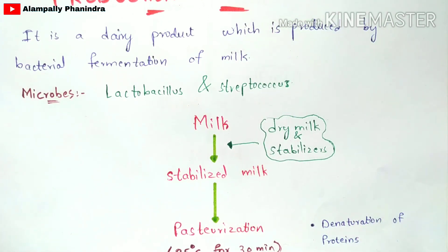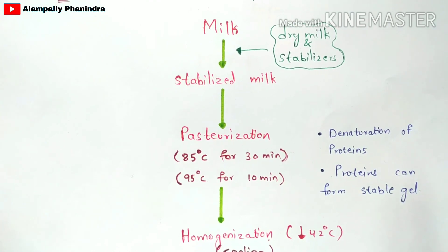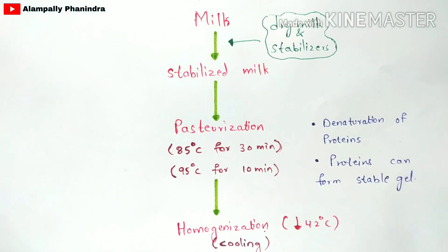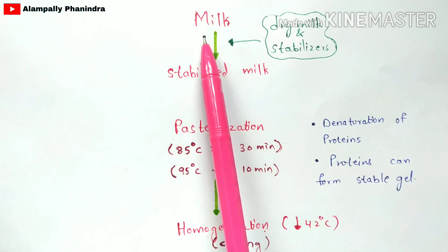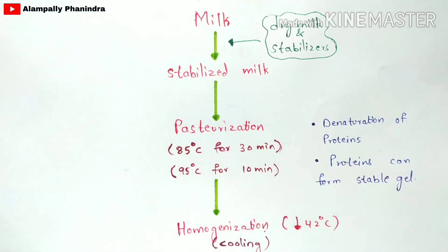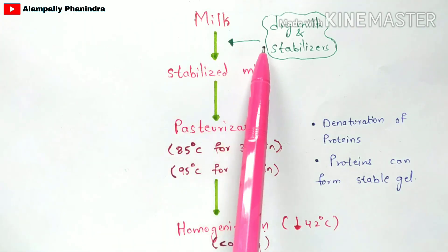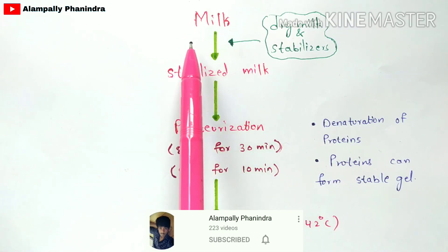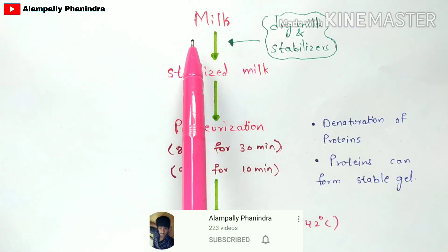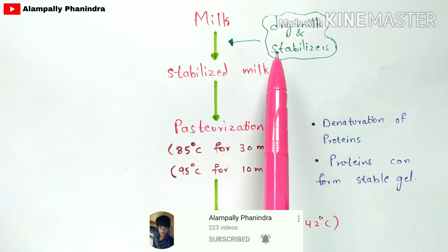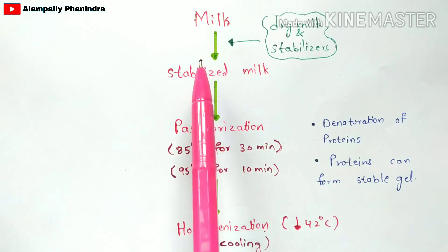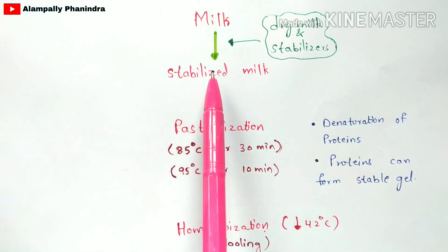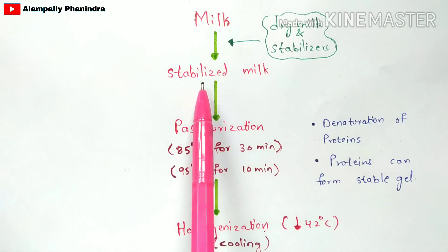Now let us see the process for the production of yogurt. First, you are going to take the milk and stabilize it. To stabilize the milk, you add dry milk to it and then add stabilizers. Once the stabilizers are added, the milk will get stabilized, and that stabilized milk will be used for the further process.